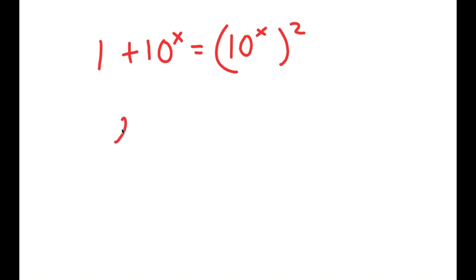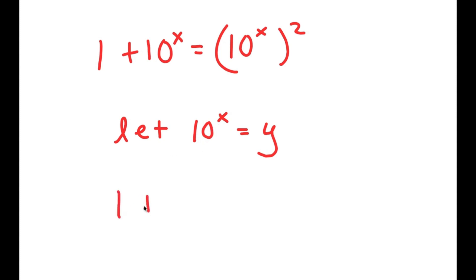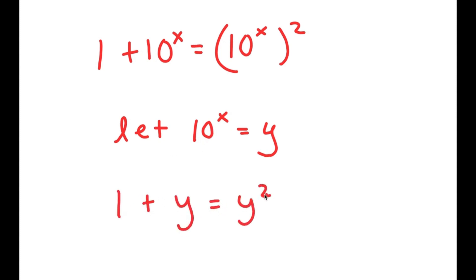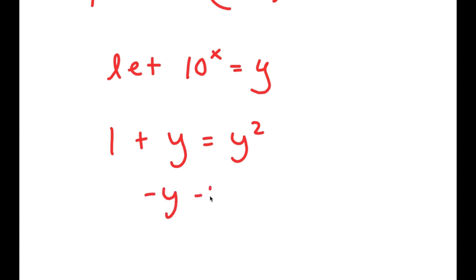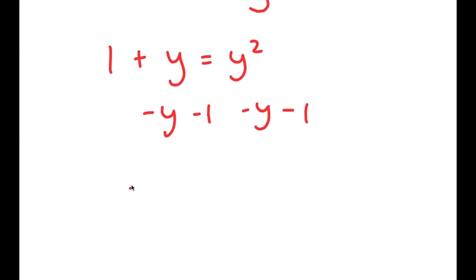Now from here, I'm going to let 10 to the power of x equal to the variable y. So if I substitute y for 10 to the power of x, I get 1 plus y is equal to y squared. Now I'm going to subtract y and 1 on both sides.